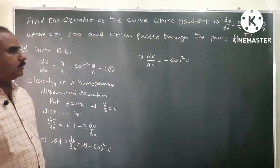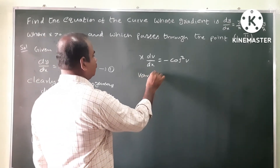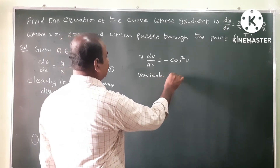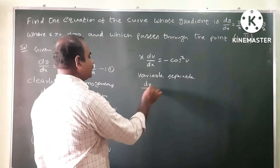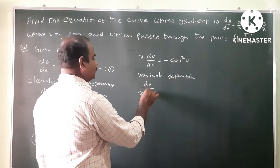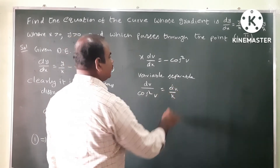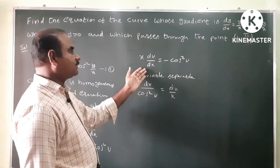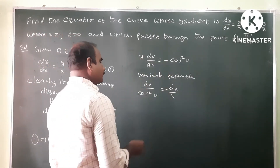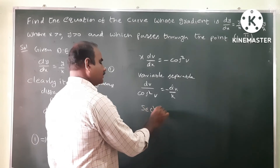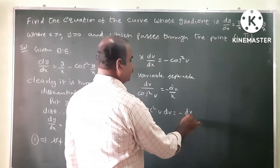Next, apply variable separation. Separating variables, moving v to the left side and x to the right side, we get dv by cos squared v equals minus dx by x, which gives sec squared v dv equals minus dx by x.